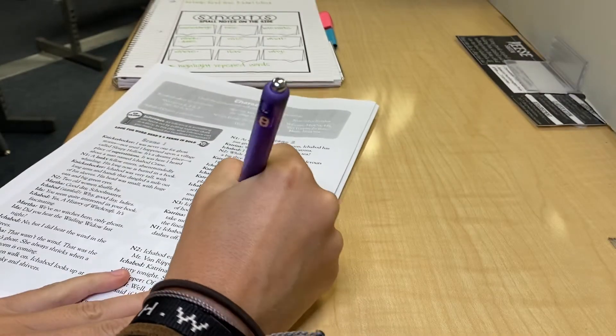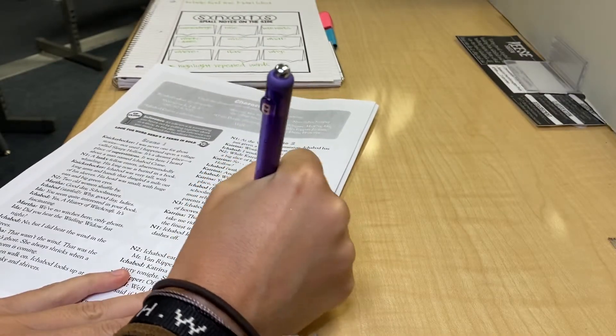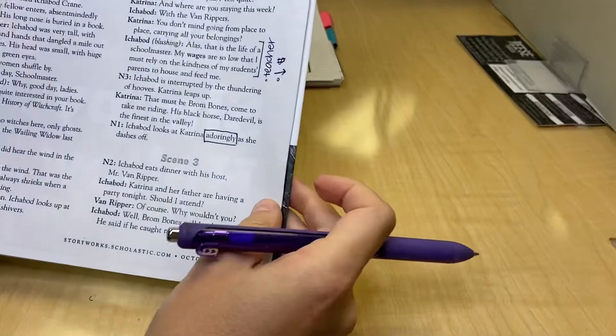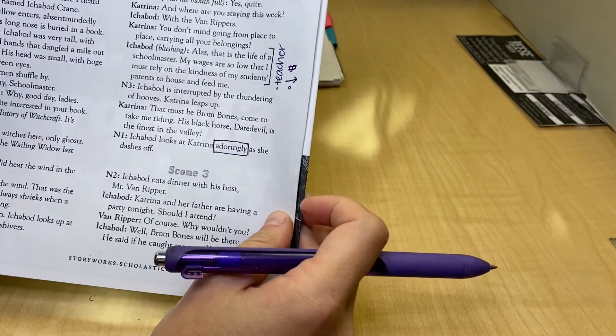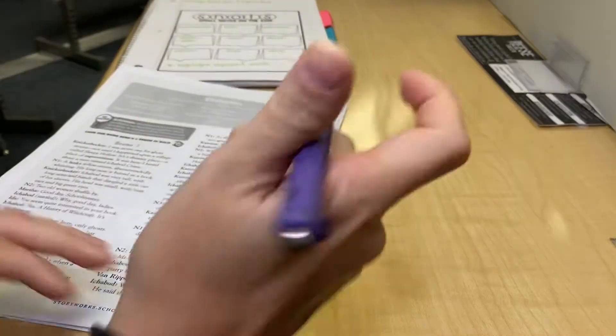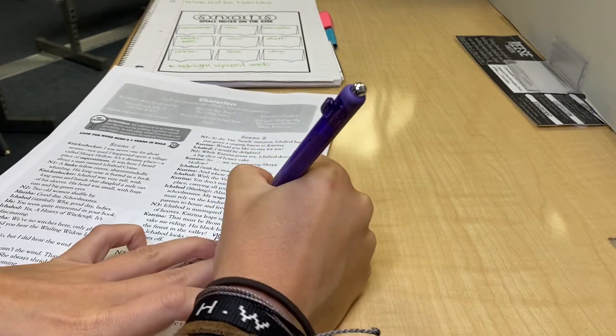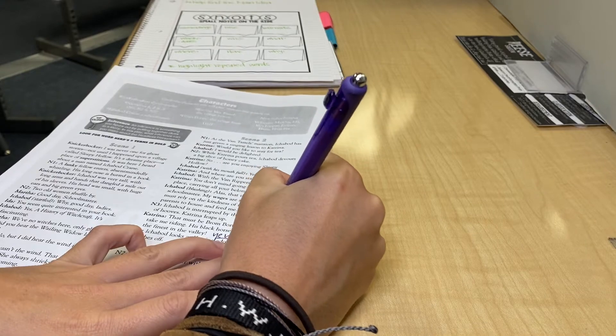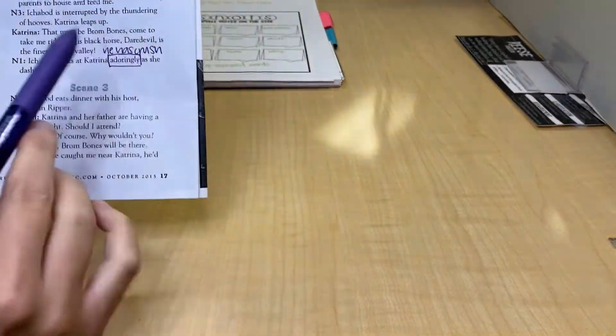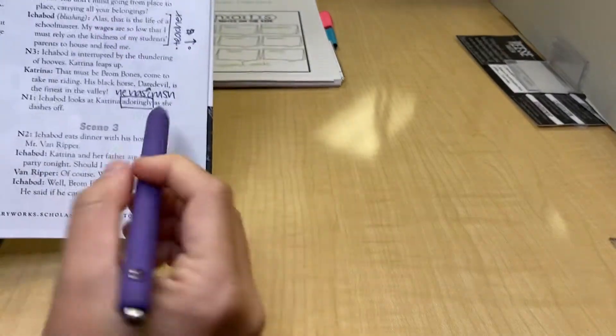Okay, now if I think about my why, why do we think Ichabod's looking at Katrina adoringly? Well, you know it, you guessed it, he has a crush. All right, so I boxed it because it's an important thing to pay attention to. It's part of the plot. And then I wrote a SNOT. He has, oops, I forgot an A, a crush.